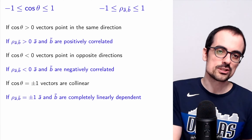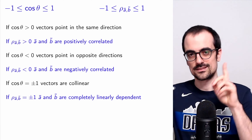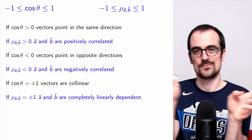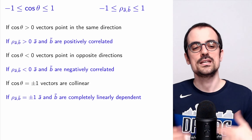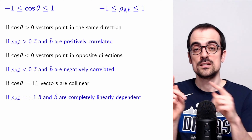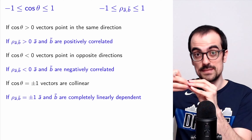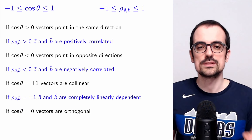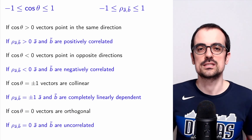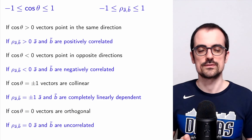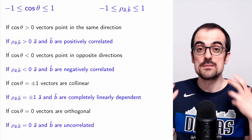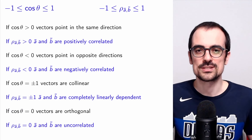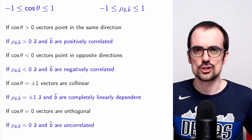So we recover the analogous statements for the correlation coefficient that we established in previous videos. If the correlation is positive, the random variables are positively correlated and the vectors point in the same direction. If the correlation coefficient is negative, the vectors point in opposite directions. If the correlation coefficient equals minus one or one, they are completely linearly dependent — the vectors lie on the same line. If it equals zero, the vectors are orthogonal, meaning the random variables are uncorrelated. This analogy captures essentially every property we derived about the correlation coefficient and allows geometric reasoning.